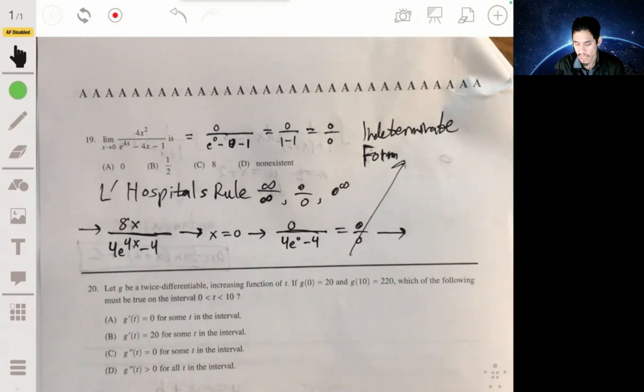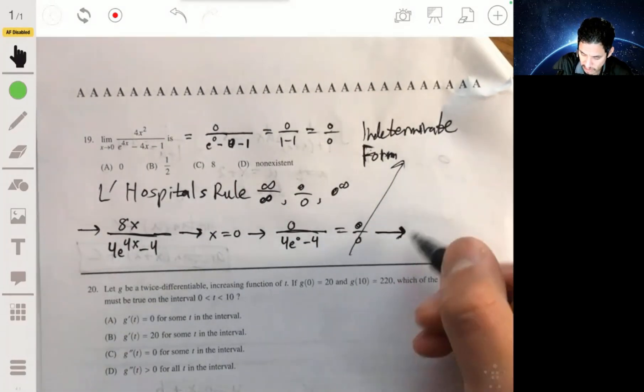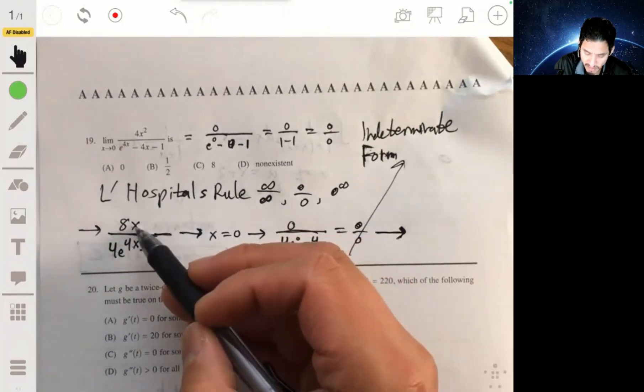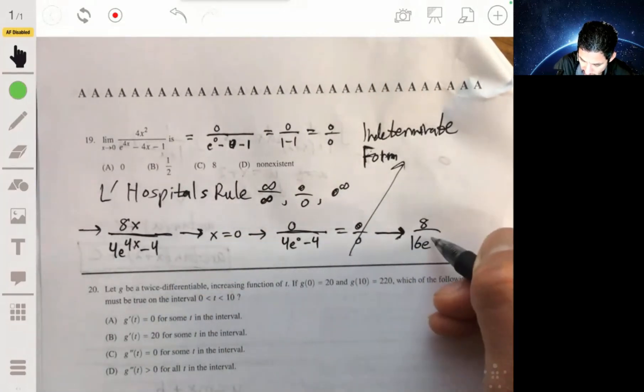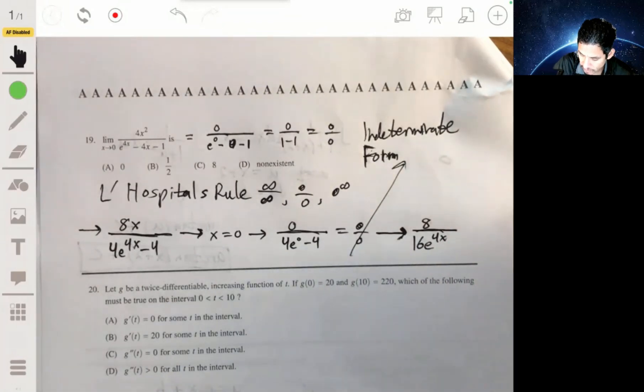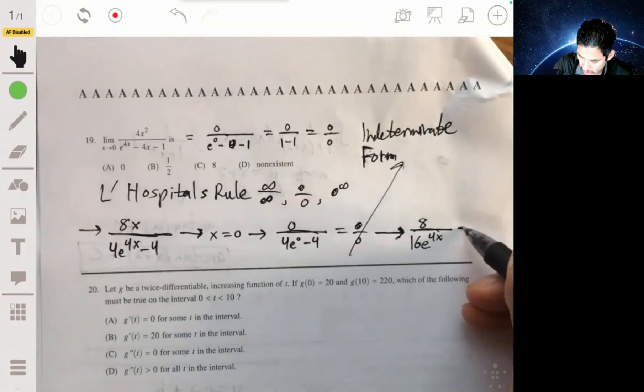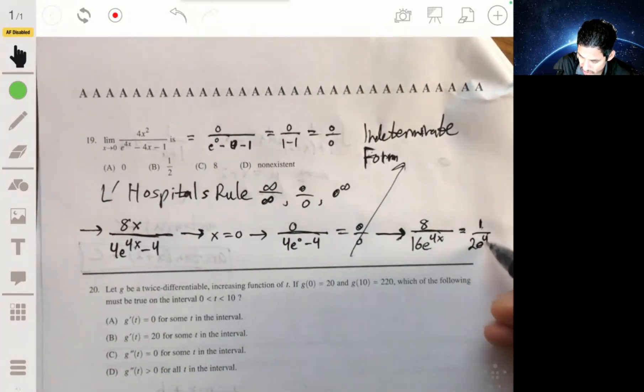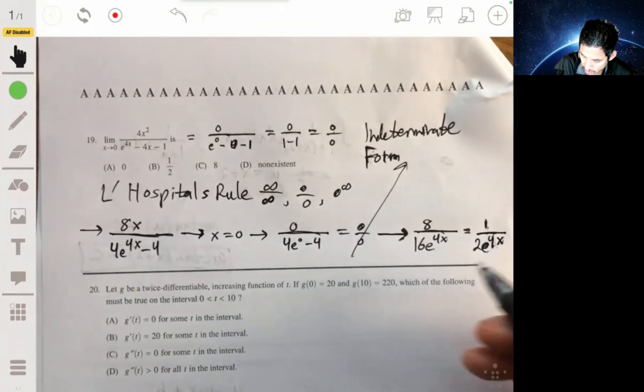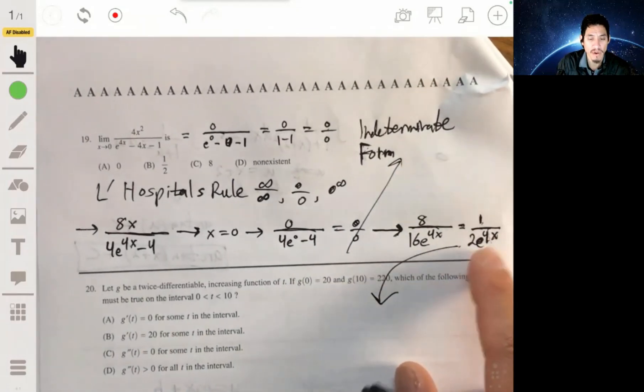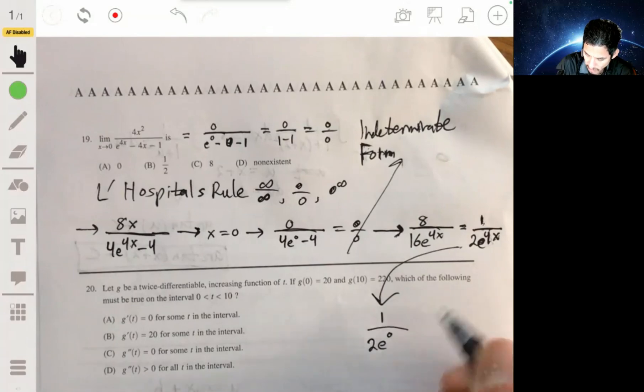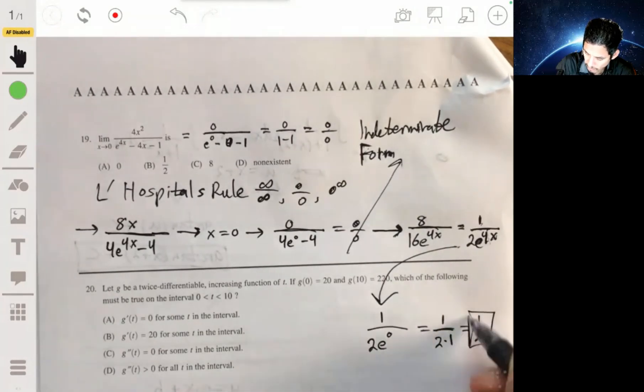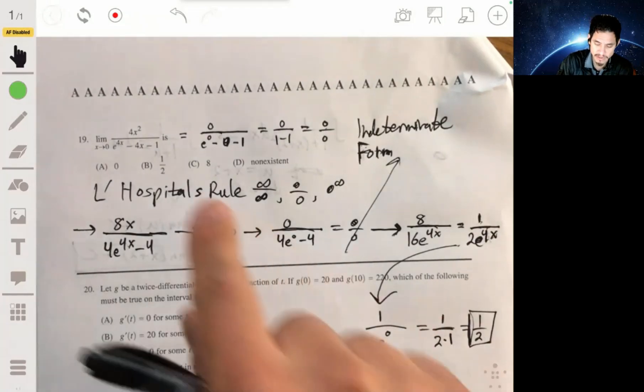You just keep on doing it, keep on doing it until you get something that is logical that's not an indeterminate form. So we take the derivative of this and then we get 8 over 16e to the 4x. So 8 over 16, that just becomes 1 over 2e to the 4x. Now when you plug 0 into here, you get 1 over 2e to the 0 or 1 over 2 times 1 or just 1/2. So you get a number this time. And so the answer then is B.